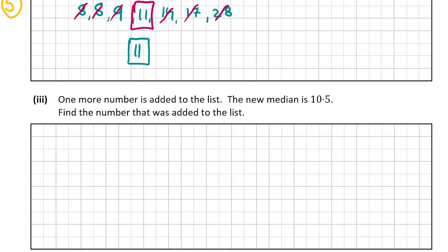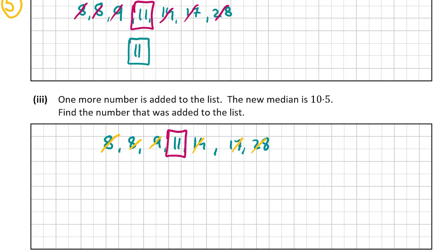Now let's have a look at part 3. We're told that one more number has been added to the list, and we now have a median of 10.5. We're asked to find the number that was added. Previously it was simple — the number in the middle was clearly 11, as the three numbers less than 11 cancelled with the three numbers greater than 11. However, this time we're going to have an even amount of numbers, which means we're going to have two numbers in the middle.